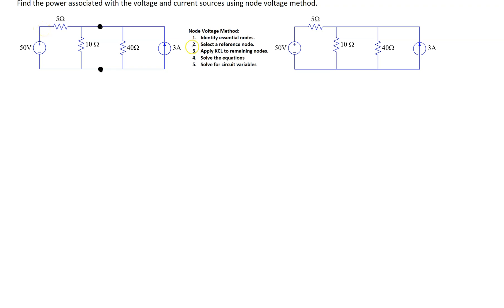Step two is to select one of the essential nodes to be a reference node. In this example, we're going to make this node the reference node, indicated by the ground symbol. Step three is to apply Kirchhoff's current law to the remaining nodes. In this example there is only one remaining node, so let's indicate the voltage at this node as V1.